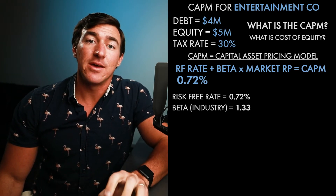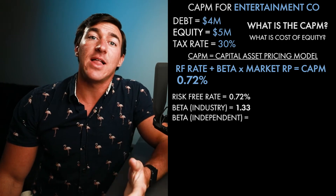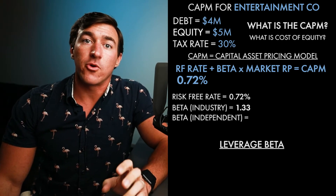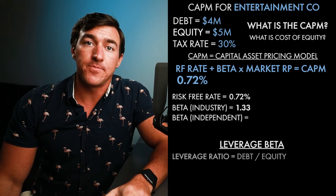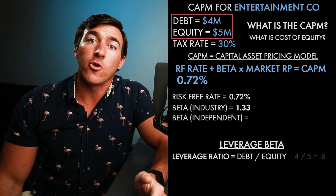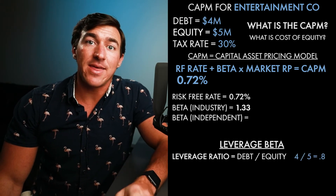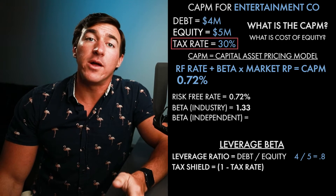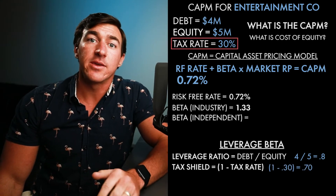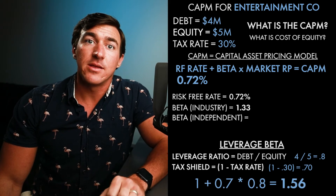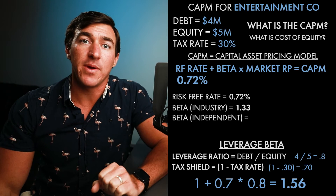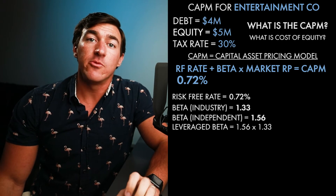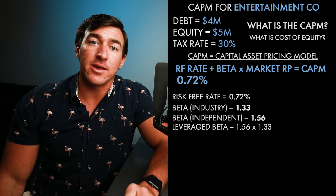That's the beta for the industry, but we want the beta for our individual company, so we have to leverage that beta. We compare using our leverage ratio and our tax shield to get the most accurate beta. The leverage ratio is total debt divided by total equity — 4 million divided by 5 million — which is 0.8. Then we multiply that times 1 plus the tax shield, which is 1 minus our tax rate: 1 minus 30% gives us 0.7. So 1 plus 0.7 times 0.8 equals 1.56. We multiply 1.56 times the industry beta of 1.33, giving us a leveraged beta of right around 2.